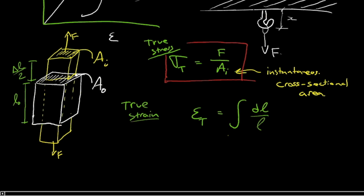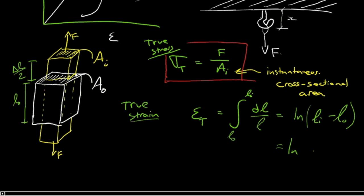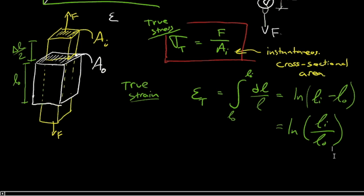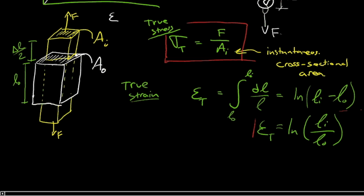And so if we do that, we find that you have ln of L instantaneous minus L0, which is ln of L instantaneous over L0. So we have another equation there. This is the true strain.